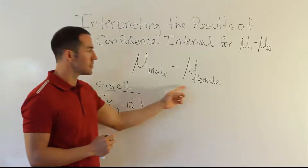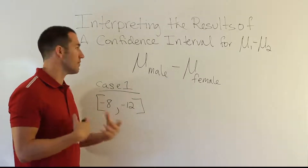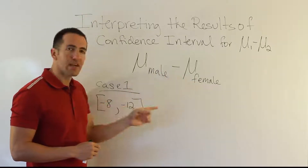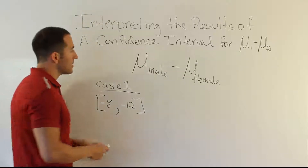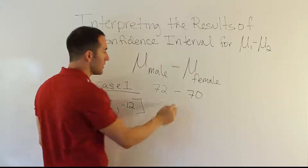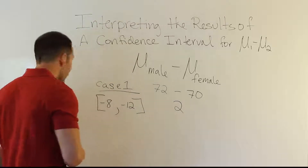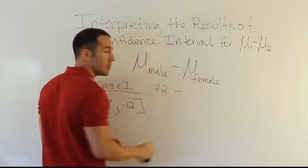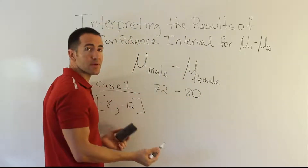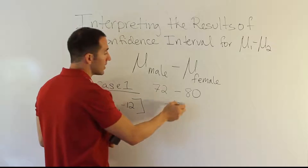To figure that out, we have to think about this subtraction problem. If these are exam scores, they typically mean something in the 60s, 70s, or 80s. If you subtract them and end up with a negative result, how does that happen? For example, if the average for males was 72 and the average for females was 80, then 72 minus 80 gives you negative 8 — a negative result because the back number is bigger than the front number.